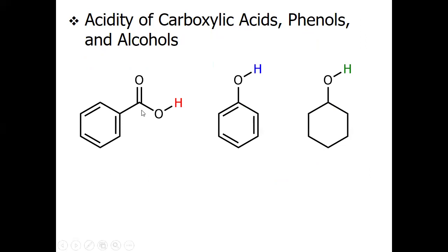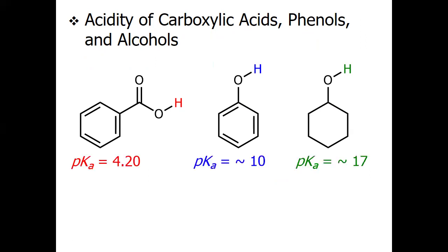Among these three compounds — benzoic acid, phenol, and cyclohexanol — which one is more acidic? The answer is benzoic acid, because it has a more resonance-stabilized conjugate base. Phenol has a pKa around 10, so it is not as acidic as benzoic acid. Cyclohexanol does not have a resonance-stabilized conjugate base, so it is not very acidic — it is more basic by comparison.